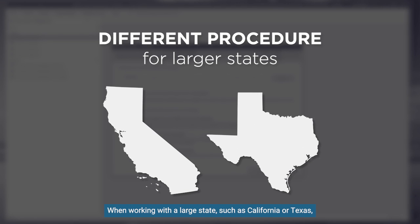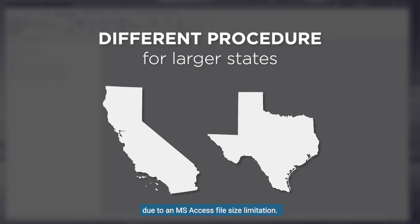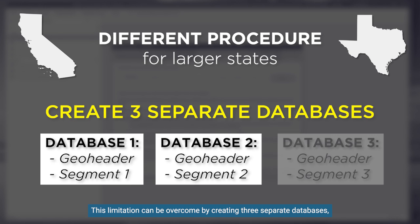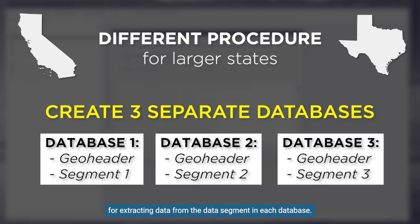When working with a large state such as California or Texas, all four data files cannot be loaded into a single Microsoft Access database due to an MS Access file size limitation. This limitation can be overcome by creating three separate databases, each one containing the geoheader and one of the three data segments. Once this is done, the procedure is the same for extracting data from the data segment in each database.